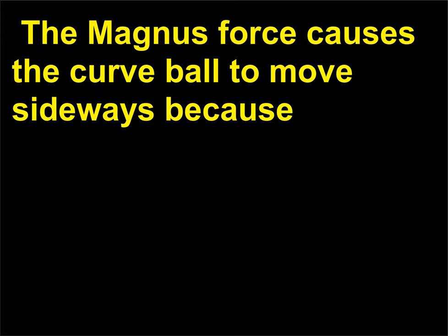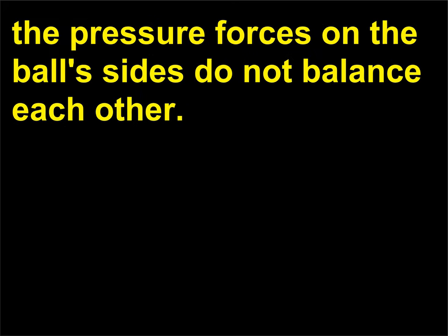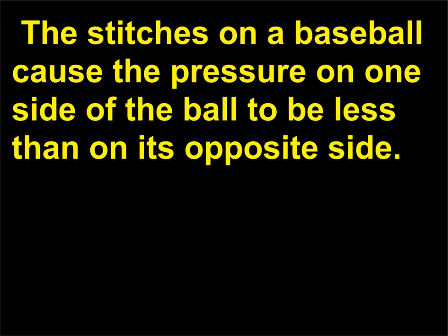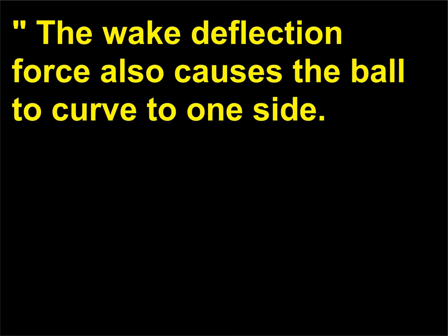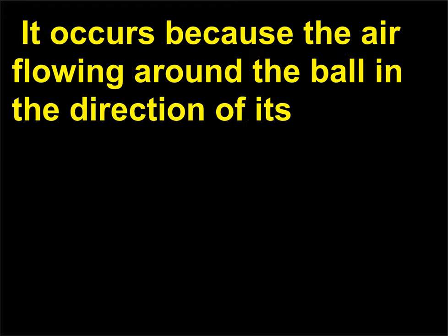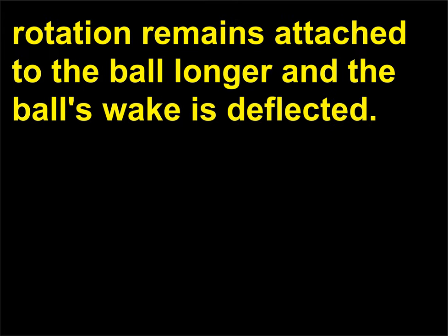The Magnus force causes the curve ball to move sideways because the pressure forces on the ball's sides do not balance each other. The stitches on a baseball cause the pressure on one side of the ball to be less than on its opposite side, forcing the ball to move faster on one side than the other and causing the ball to curve. The wake deflection force also causes the ball to curve to one side; it occurs because the air flowing around the ball in the direction of its rotation remains attached to the ball longer and the ball's wake is deflected.